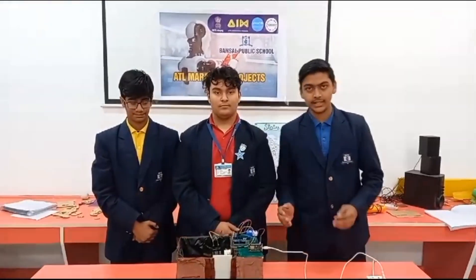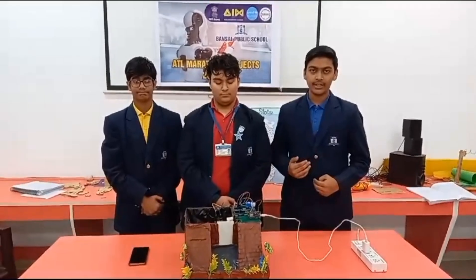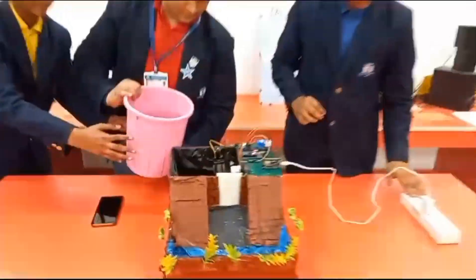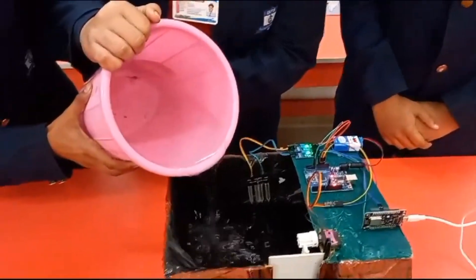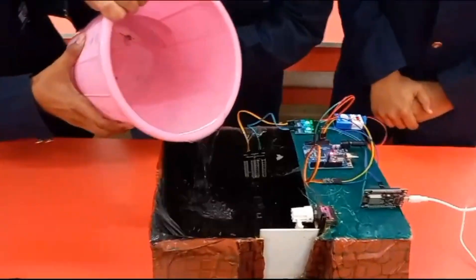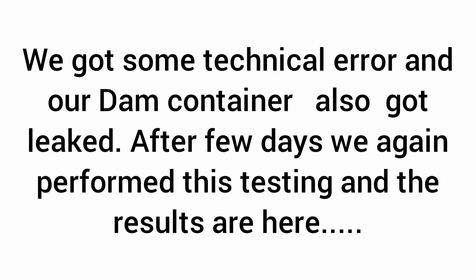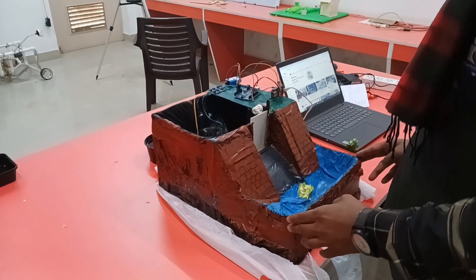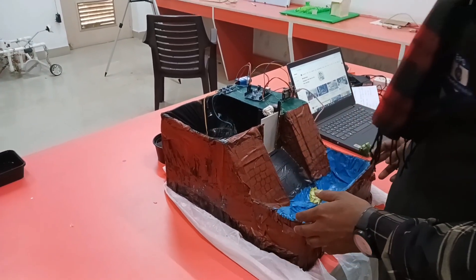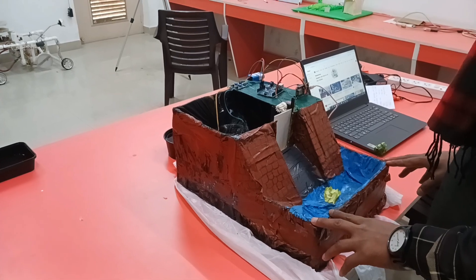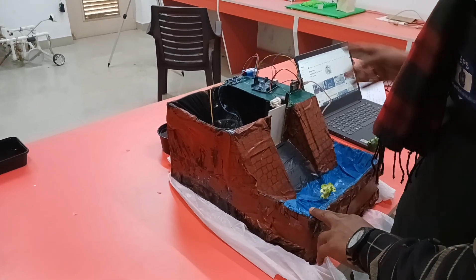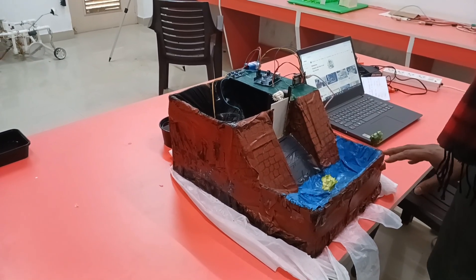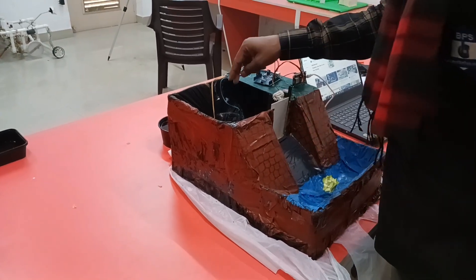Thank you Malik for explaining the salient features of the prototype Flood Alert System. Now I will do the testing of the prototype Flood Alert System. When we demonstrated this project previously, a problem arose — this container got leaked. So today I am going to show you how it works. Basically this is an IoT-based project in which the device sends alerts to the people living around the dam by sending SMS or email. So now I will pour water into this container.